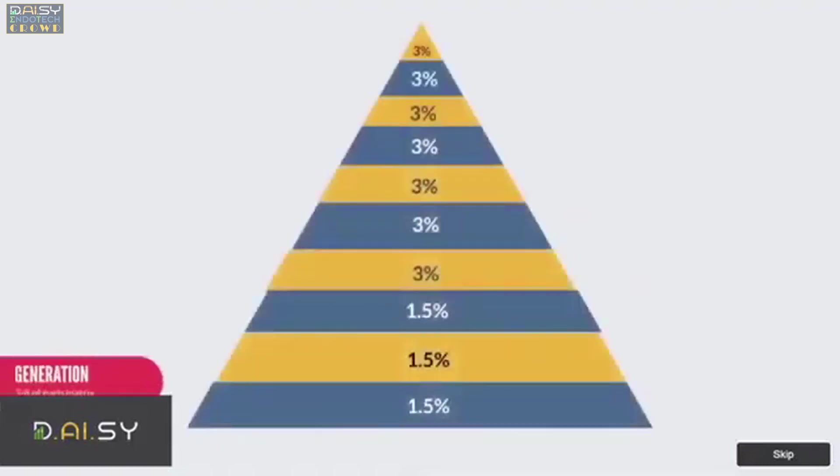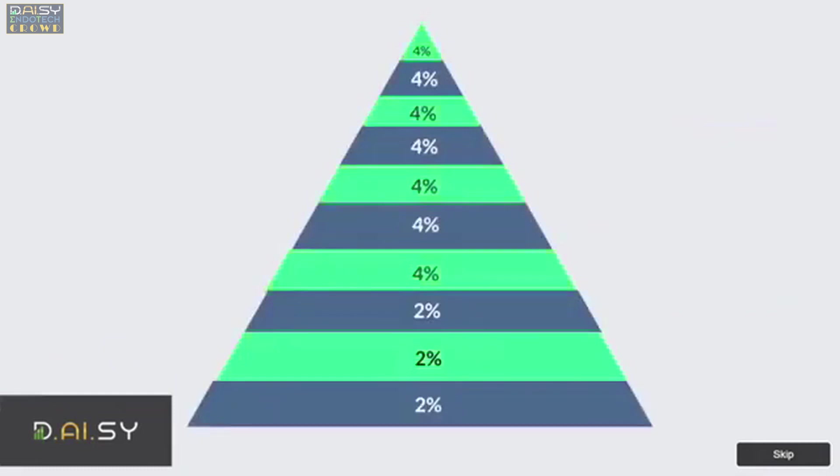On generation 3 through 8 of each matrix, you will be rewarded 3% on tiers 1 through 7 and 1.5% on tiers 8 through 10. On generation 9 through 10, you will be rewarded 4% on tiers 1 through 7 and 2% on tiers 8 through 10.